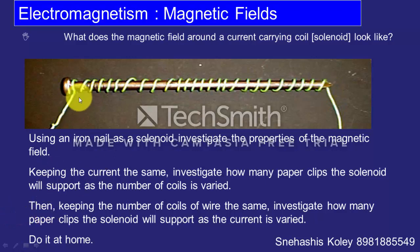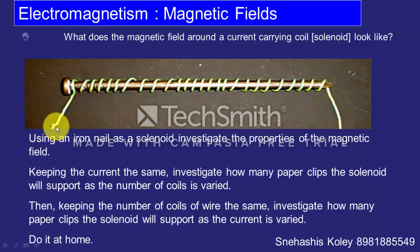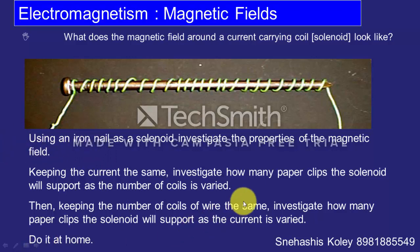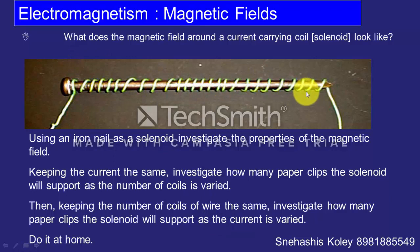You can make a solenoid or electromagnet by coiling an insulated copper wire around an iron nail and connecting it with a battery — you can do this experiment at home. The strength of the electromagnet can be increased in two ways: first, by increasing the number of turns of the coil; second, by increasing the current by adding more batteries.